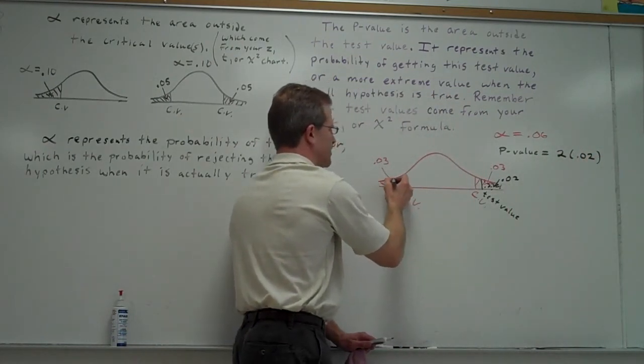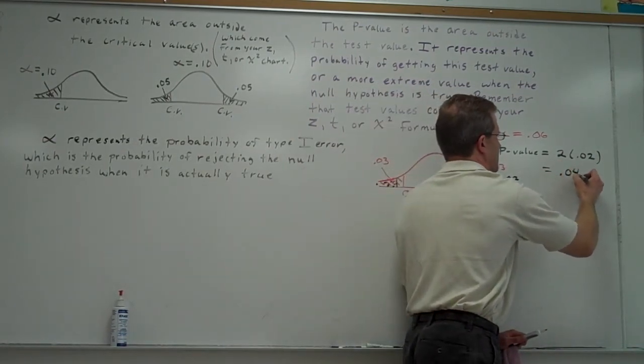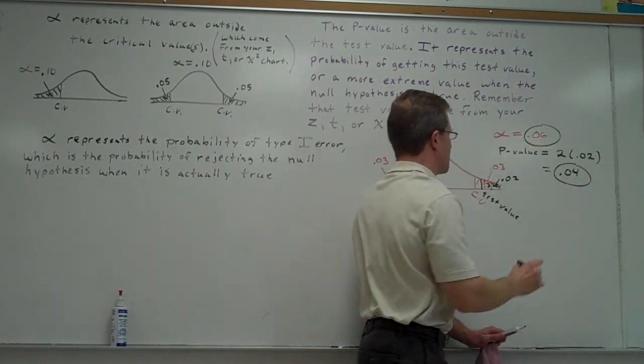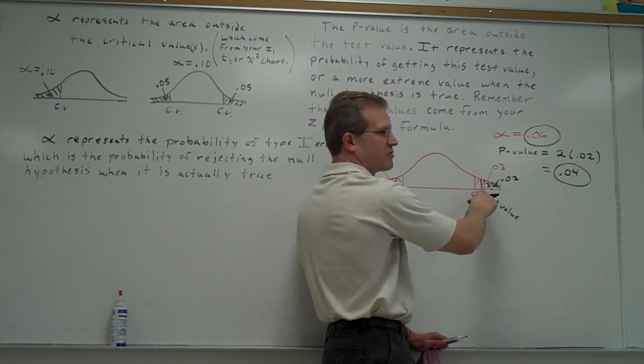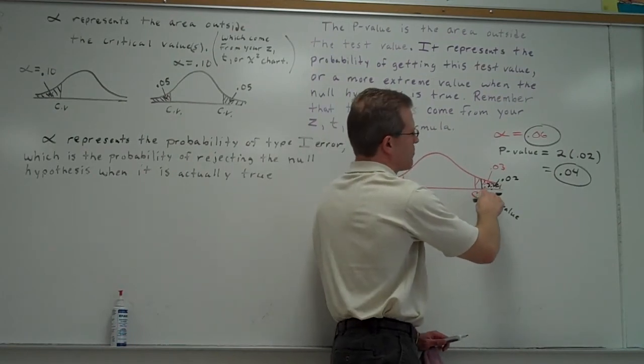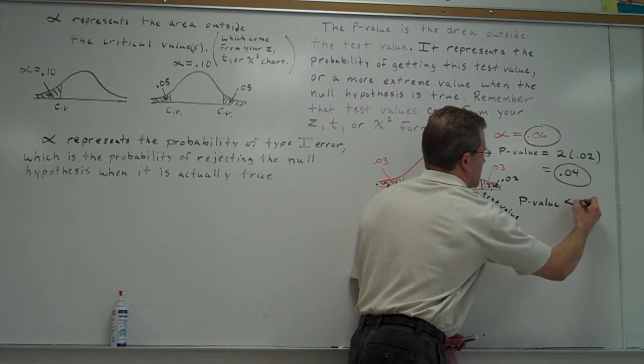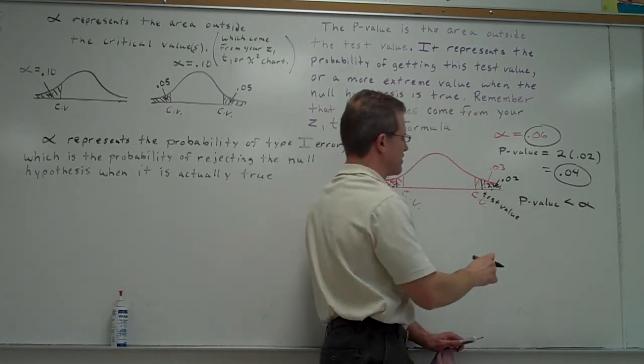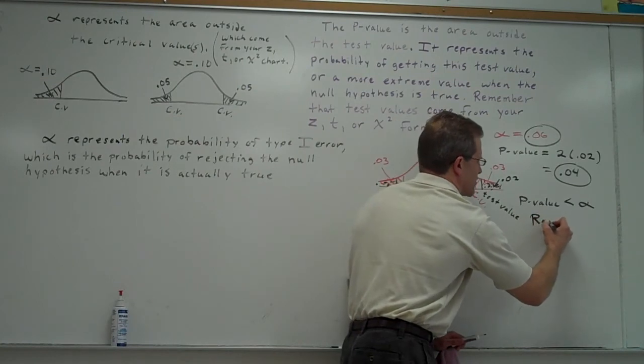So we're actually looking at both of these areas here, which would be 0.04. And the fact that 0.04 is less than 0.06 tells me I should reject. When the p-value is less than alpha, that tells me the test value must fall in the critical region. So you're going to reject the null.